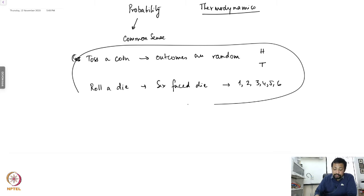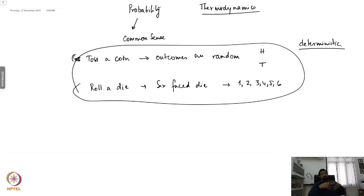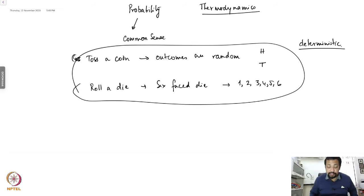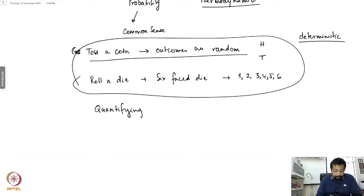All of this tells you that nothing in nature is deterministic. This is completely opposite of what you have encountered in Newtonian mechanics, where given a single particle and the forces, the trajectory is completely deterministic and you can determine it at later times. But here, in these events, the outcomes are random. So one has to figure out a way of quantifying probability.